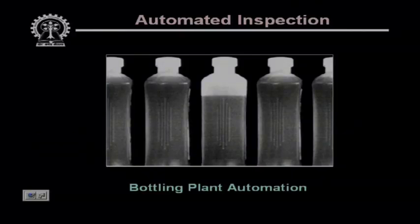Detection of empty or partially filled bottles is very important, and image processing techniques can be used to automate this process. We have shown a snapshot of the bottling process where some bottles are completely filled and one bottle in the middle is partially filled. We want to detect this particular bottle and remove it from the production line so that no empty or partially filled bottles reach the customer.